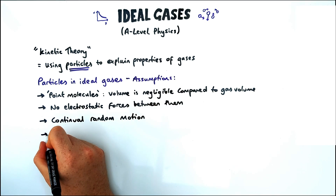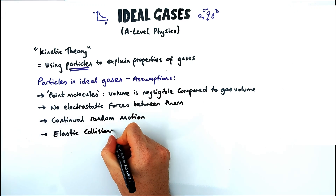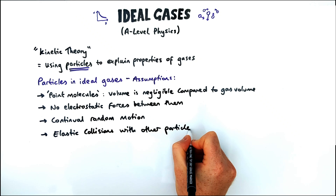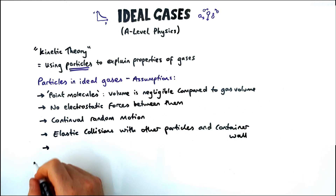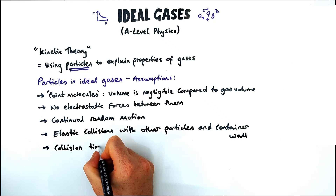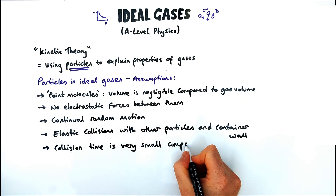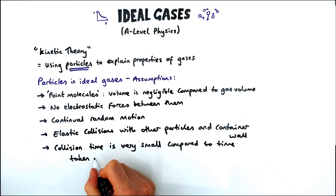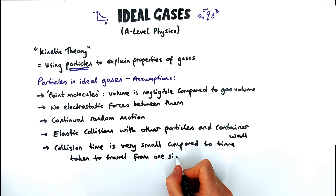Every collision the particles are involved in is elastic — that could be with other particles or with a container wall. That means all kinetic energy is conserved and not lost as heat. Our last assumption is that the collision time is very small compared to the time taken to travel from one side of the container to another. This will be really important when we look at a derivation later in the video.